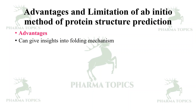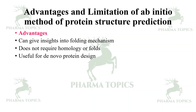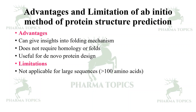Advantages of ab initio prediction include: it provides insights into folding mechanisms, does not require homology or folds from a database, and is useful for de novo protein design. However, there are limitations: it is applicable only for smaller sequences of less than 100 amino acids and is not suitable for large proteins, which in reality often have thousands of amino acids. It is also a very expensive method computationally.